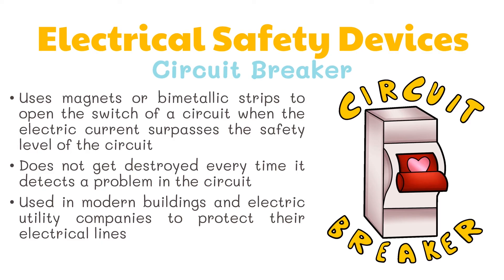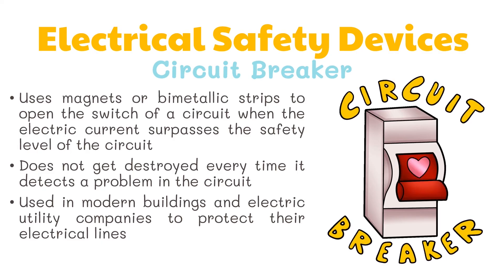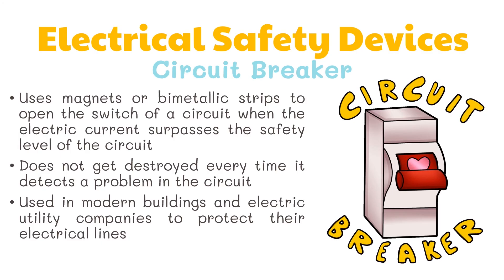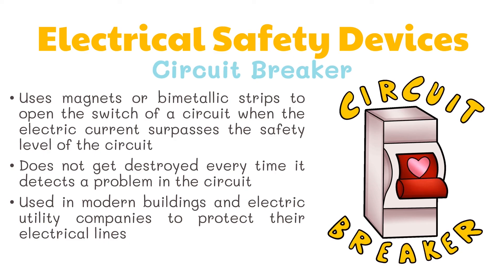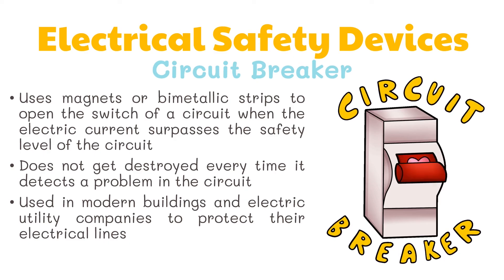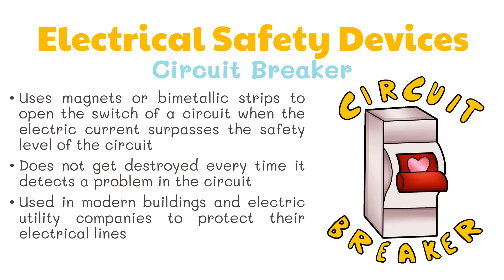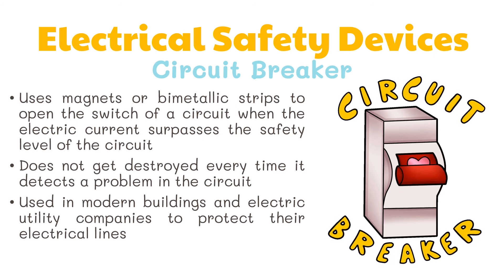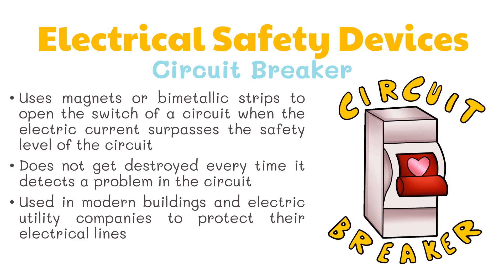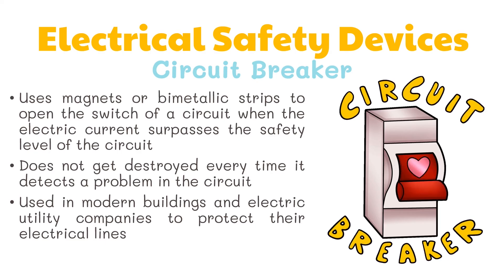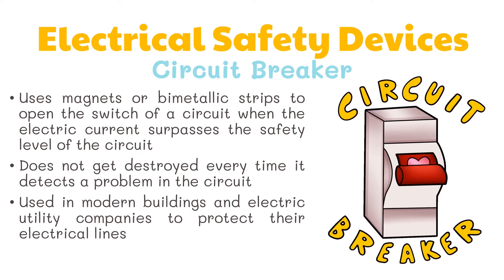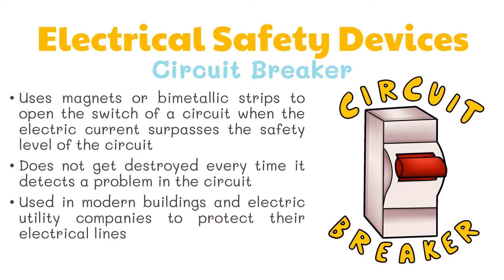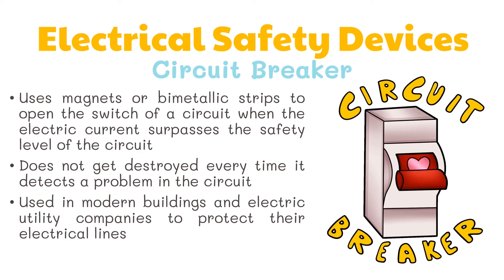Next, we have the circuit breaker. It uses magnets or bi-metallic strips to open the switch of a circuit when the electric current surpasses the safety level. This is similar to a fuse, except it is more modern and advanced because it does not get destroyed every time it detects a problem. It is used in modern buildings and electric utility companies to protect their electrical lines.